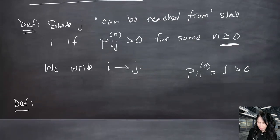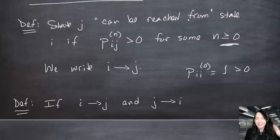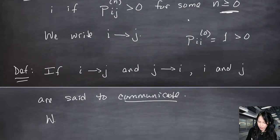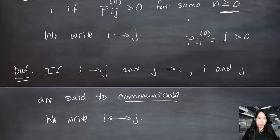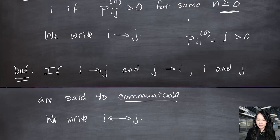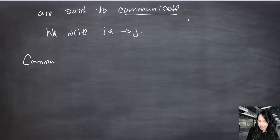Another definition: if we can get from i to j and from j to i, the states are said to communicate, written i ↔ j. We're headed towards that limiting distribution, and I'm setting up definitions to establish theorems like 'if all states communicate, then...' Communication is an equivalence relation, meaning it has three properties: reflexive, symmetric, and transitive.